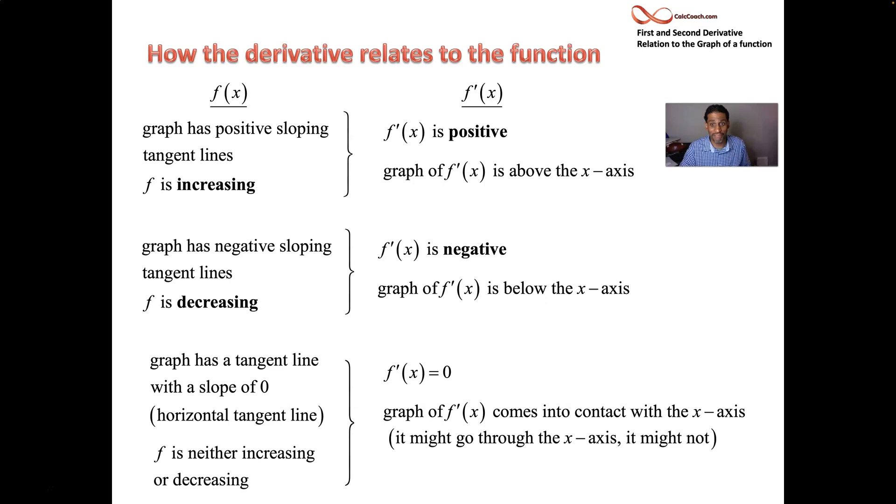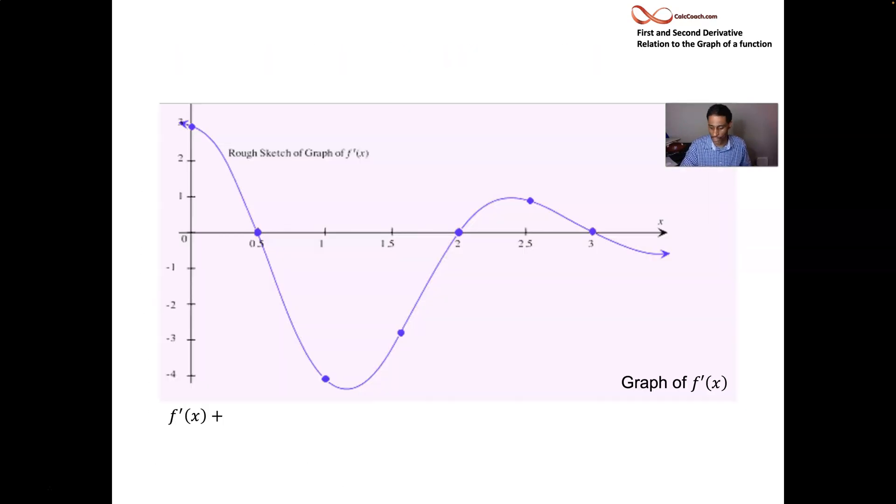All right, let's go to a graph. So here's a graph of the derivative of a function. It's the derivative graph. So what are you looking for? You're looking for places where the graph is above the x-axis. This is the derivative we're talking about. And so it's above the x-axis for the first part, from 0 to a half. That means your function is increasing.